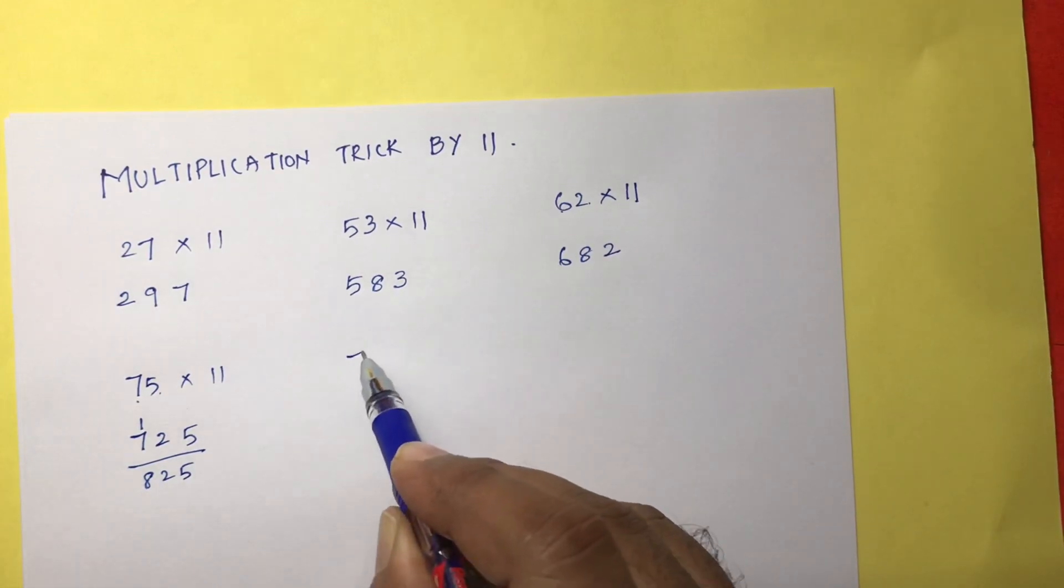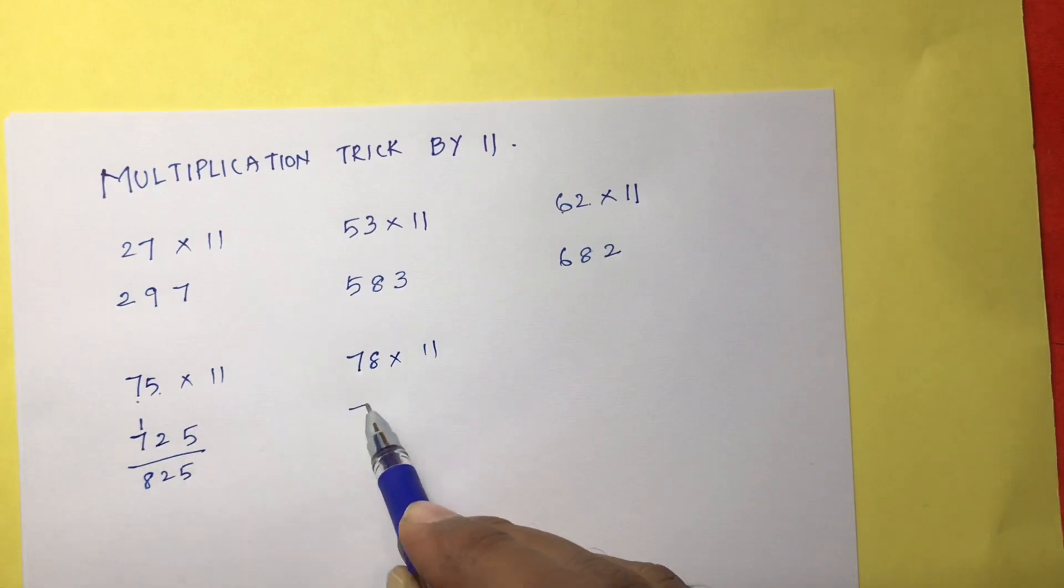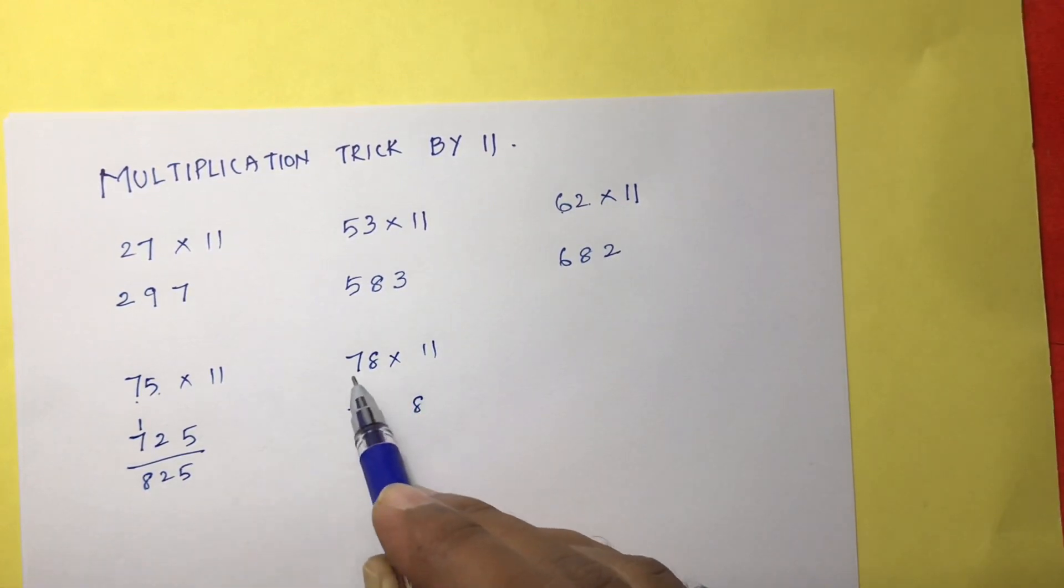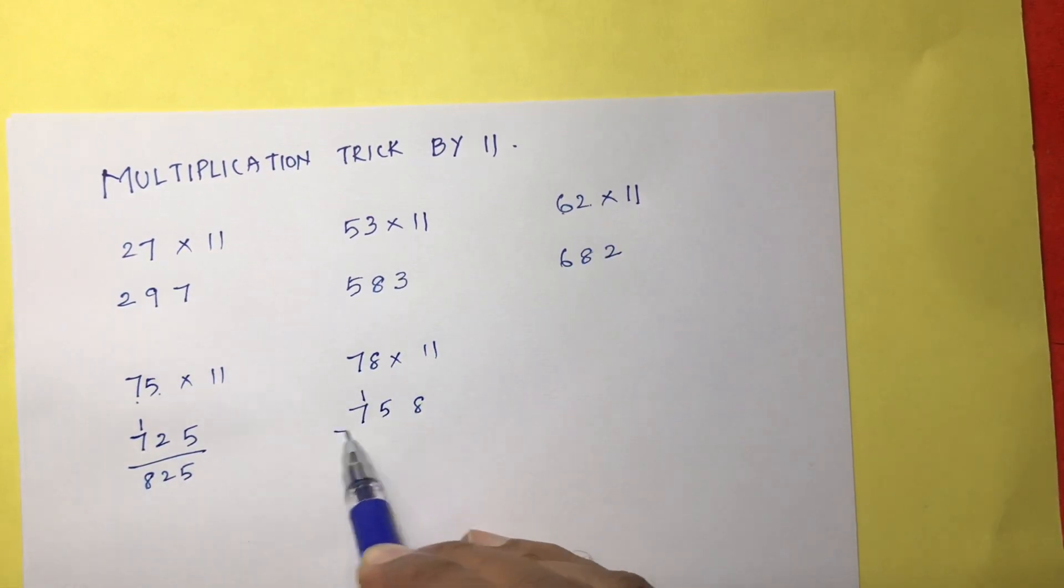If you take 78 into 11, so 7, 8. 7 plus 8 is 15, so 5 here, 1 here. So the answer is 858.